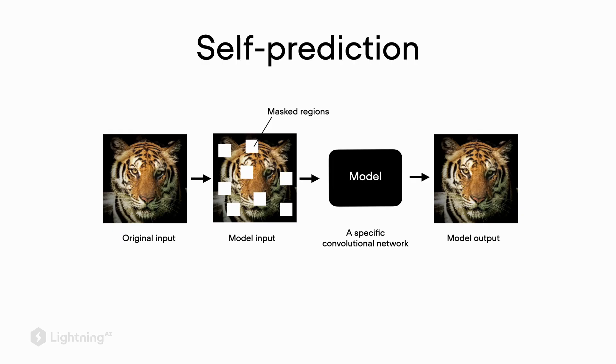In practice, there are many different types of self-prediction tasks. Here I'm outlining a common one which is a masked autoencoder. Think of the model as a specific type of convolutional neural network. The input here is this masked input image that we generate from the original input image, and the model now has to predict the original input image from this masked image.